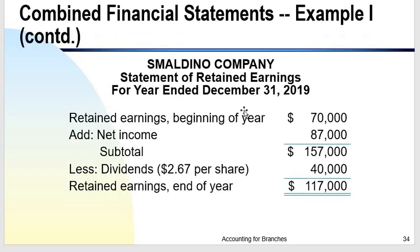For the combined statement of retained earnings: beginning retained earnings, plus combined net income, less dividends declared, gives ending retained earnings of $117,000.